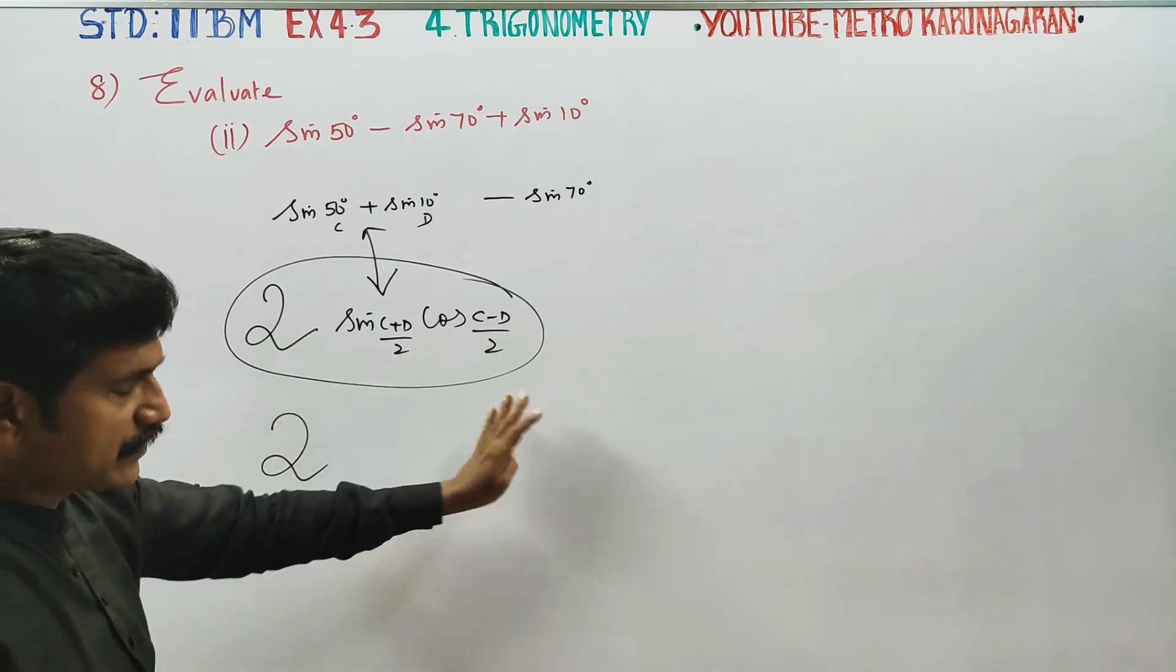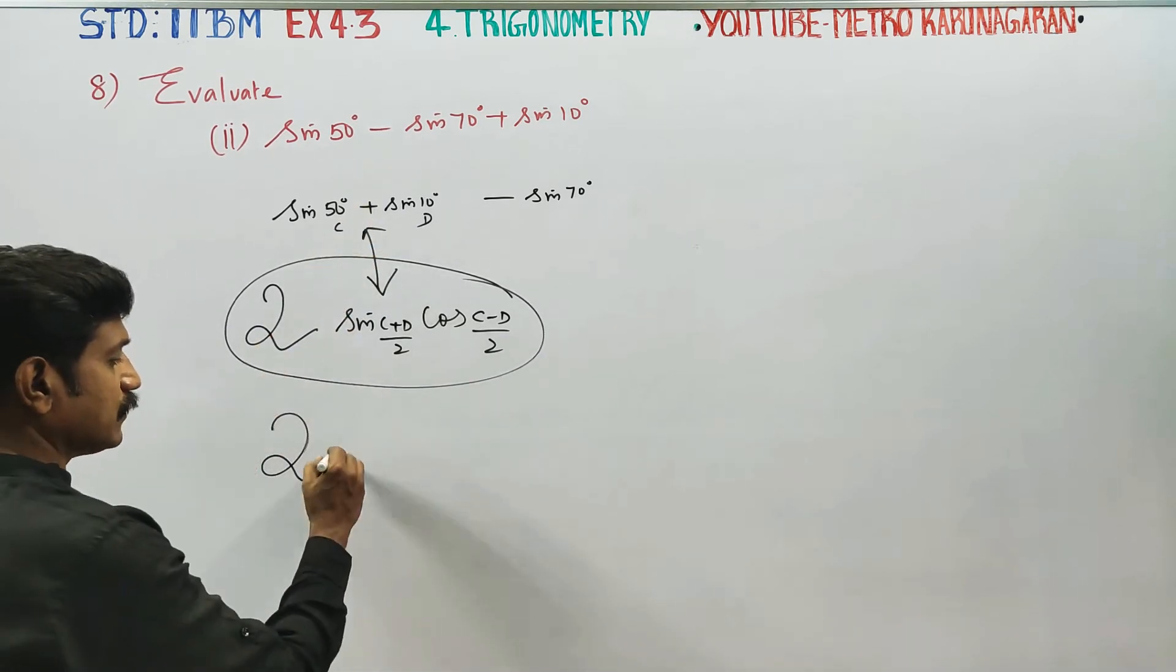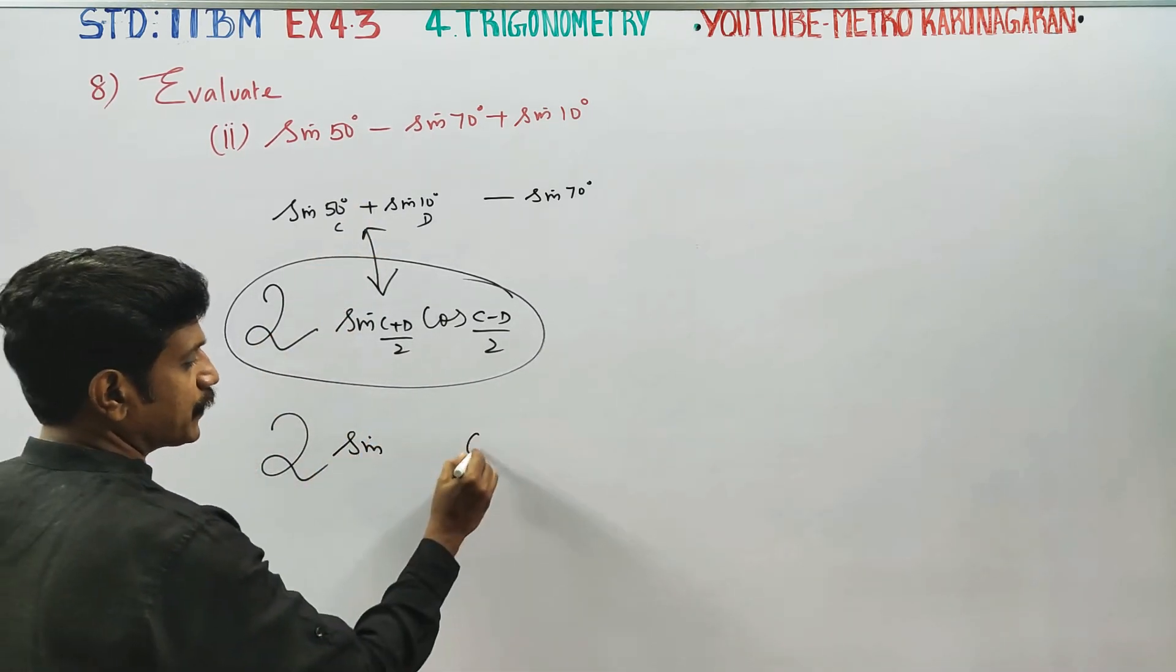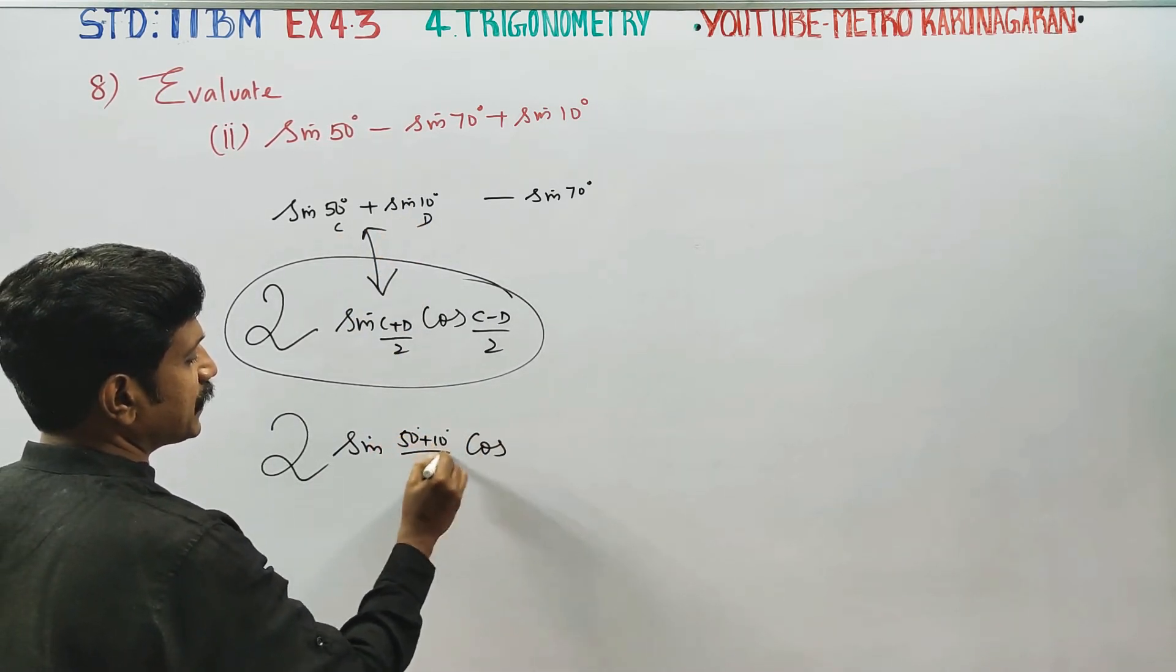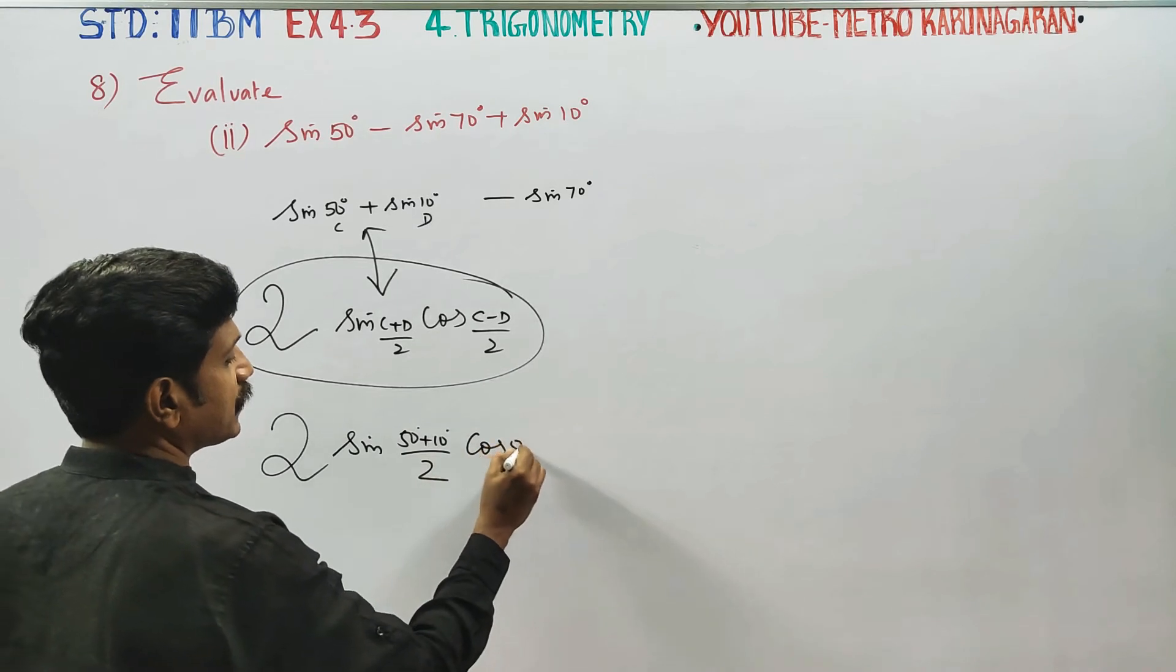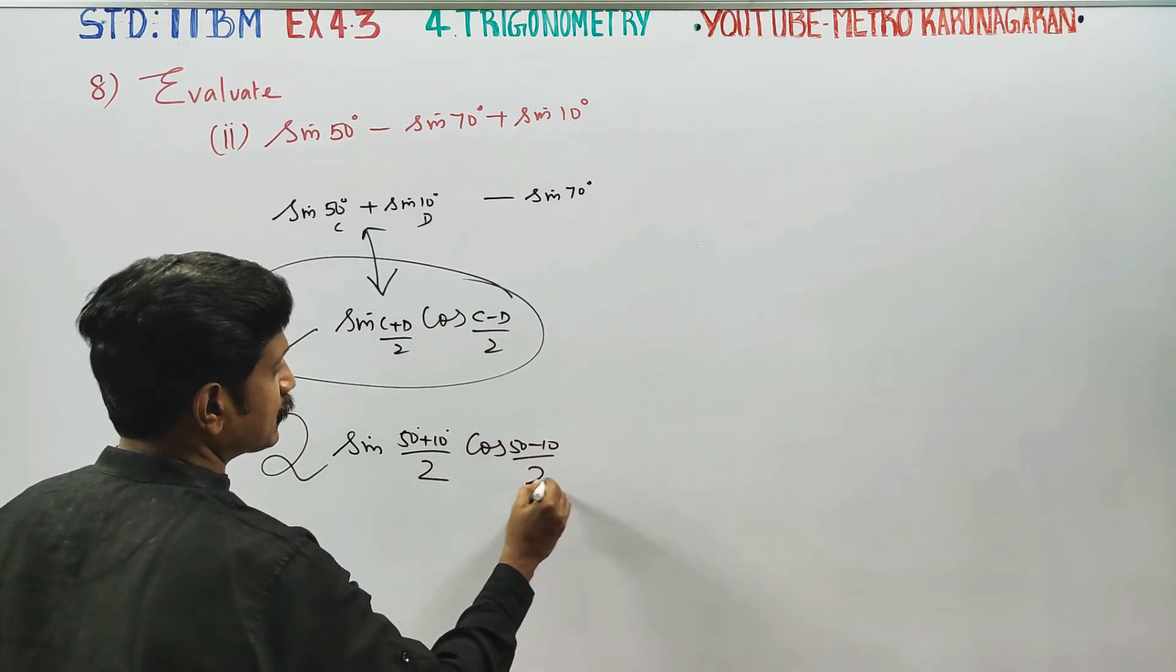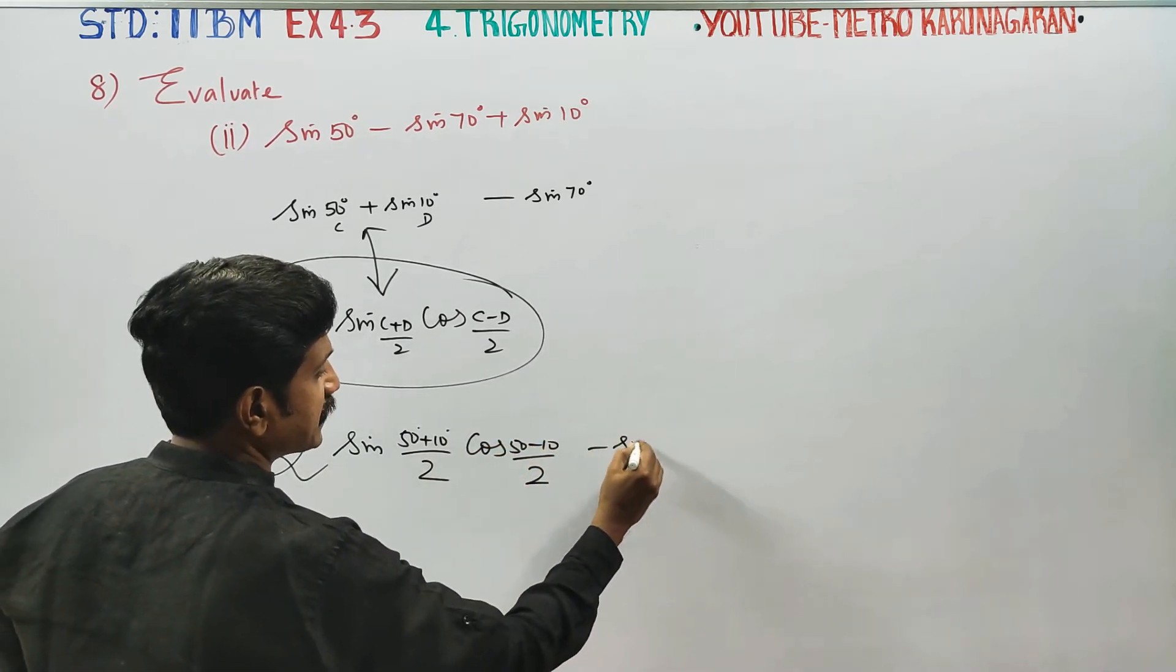The answer will have sin, it will be a product. Plus will give sin. Then cos will come. Add the 2 angles and divide by 2: 50 plus 10 by 2, 50 minus 10 by 2, minus sin 70.